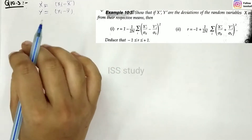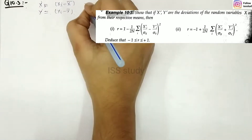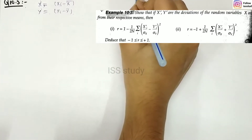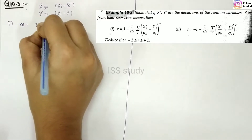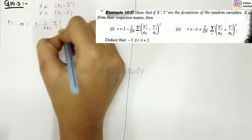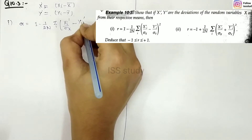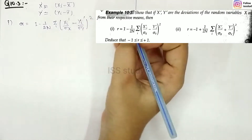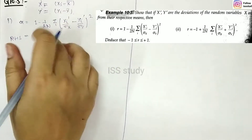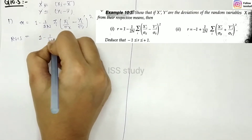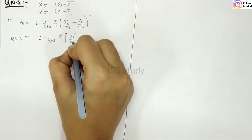From their respective means, we have to prove two points. The first thing we have to prove is: r equals 1 minus 1 upon 2n, summation over i of (x_i' upon σ_x minus y_i' upon σ_y) whole square.